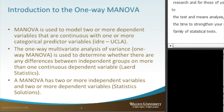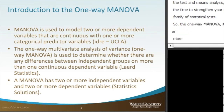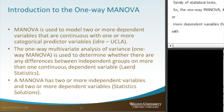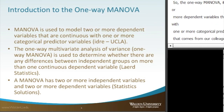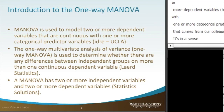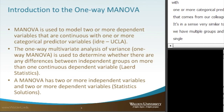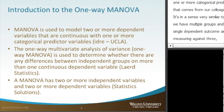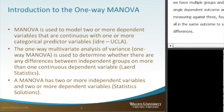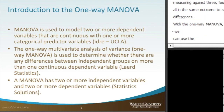One-Way MANOVA is used to model two or more dependent variables that are continuous with one or more categorical predictor variables. In a sense, it's very similar to the ANOVA where we have multiple groups and we're measuring a single dependent outcome — we could be measuring against three, four, five, or six groups in the same outcome to see if there are any differences. With the One-Way MANOVA, we can use those three, four, or five groups and we're actually measuring two dependent variables.